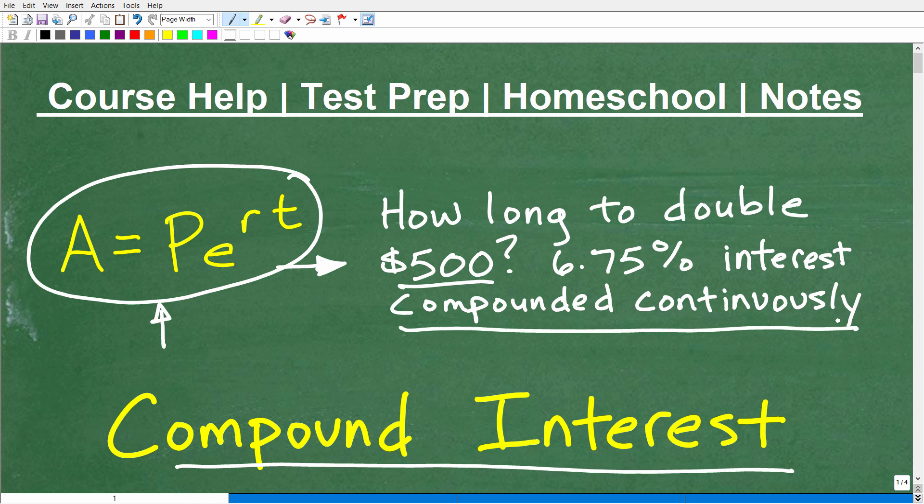So you go to your bank, and they're saying, hey, we'll give you 6.75% interest compounded continuously. You deposit $500. How long is it going to take to double that investment? That is the problem.